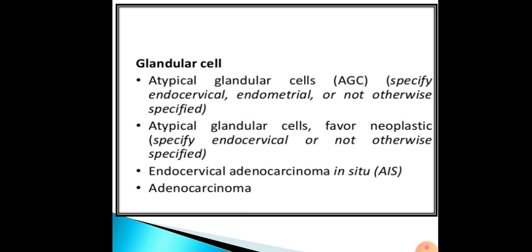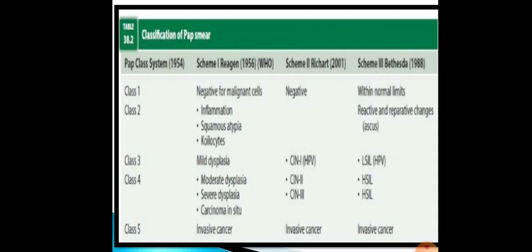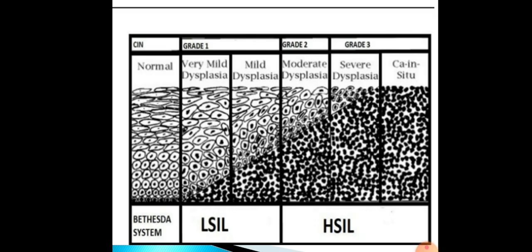Glandular cell abnormalities include: atypical glandular cells — specify endocervical, endometrial, or not otherwise specified; atypical glandular cells, favor neoplastic — specify endocervical or not otherwise specified; endocervical adenocarcinoma in situ; and adenocarcinoma. This picture shows the Bethesda system classification with LSIL and HSIL.